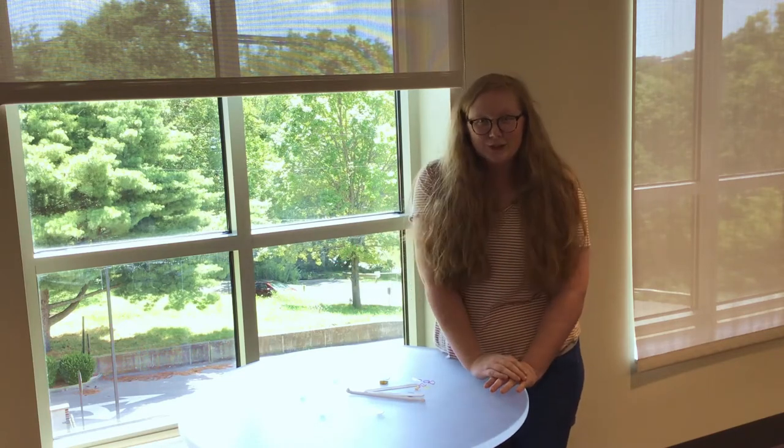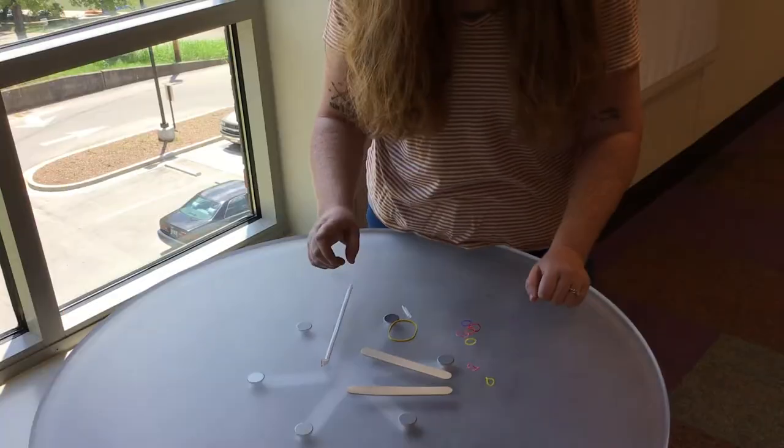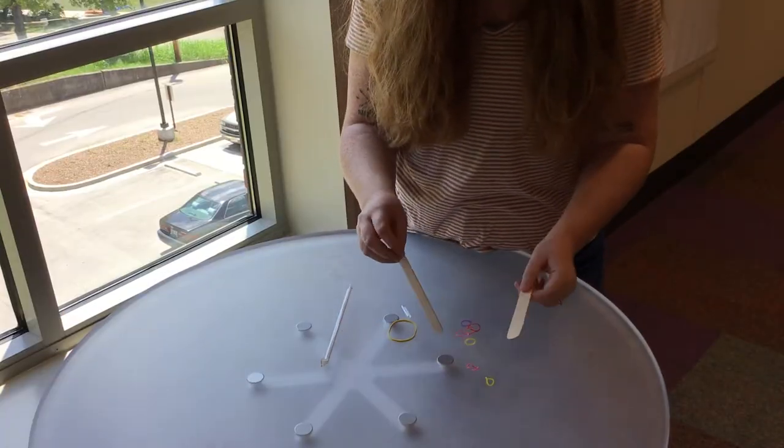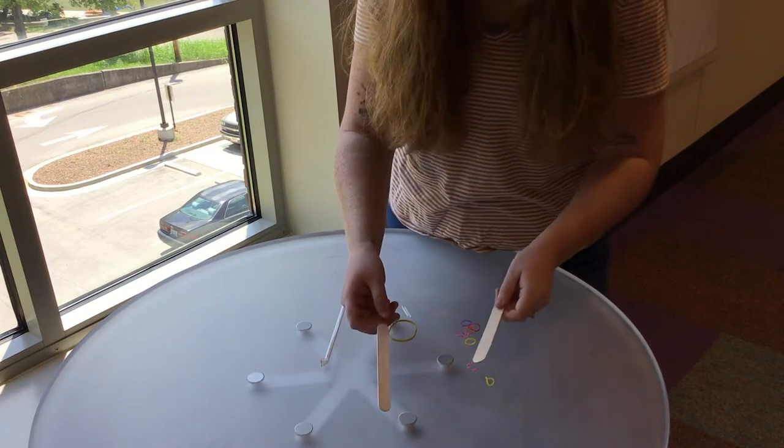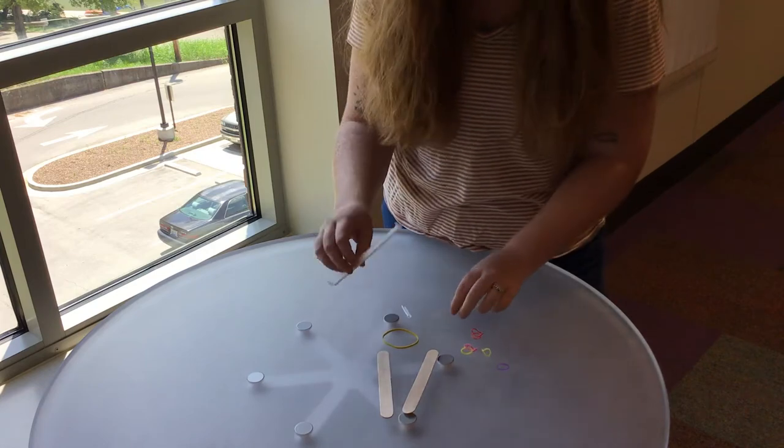So without further ado we are going to make our very own harmonica. In your kit you've got a bag with four craft sticks, two big rubber bands, and a lot of little rubber bands and a straw.